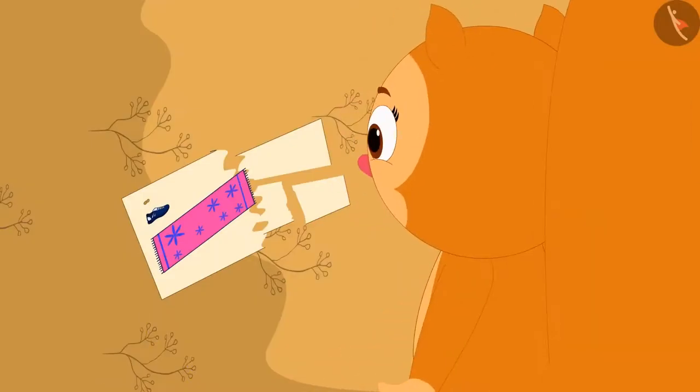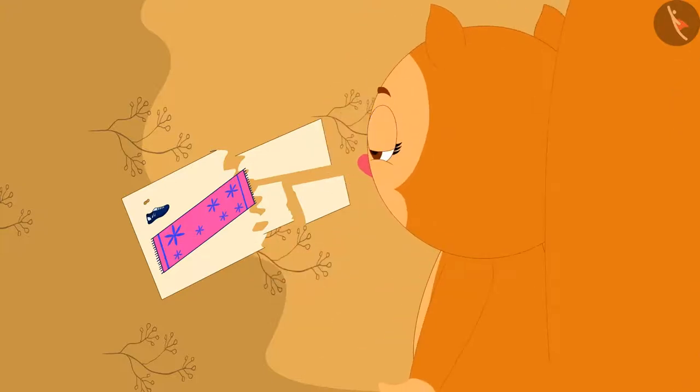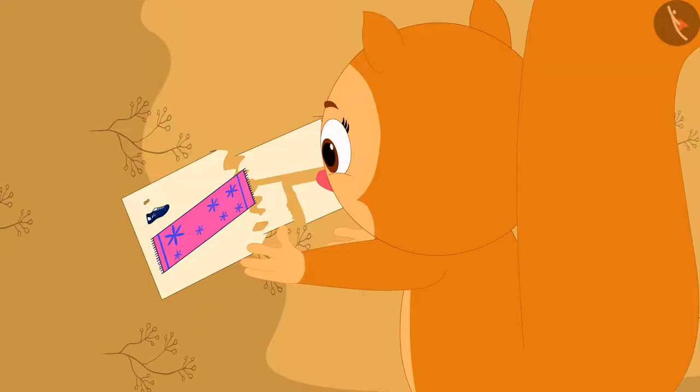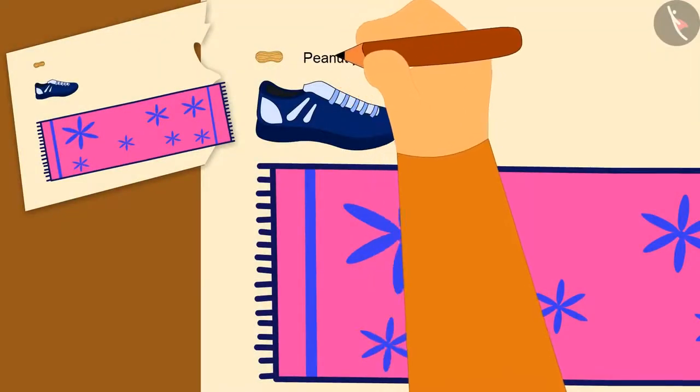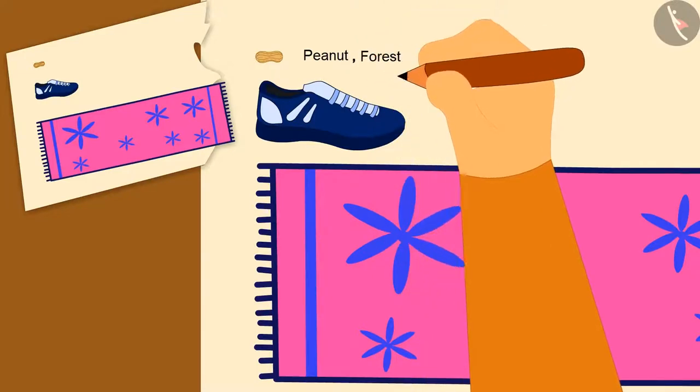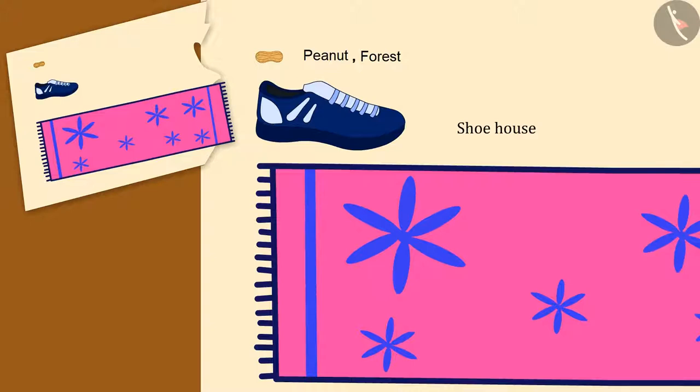Now, Chanda is unable to understand which is the measure of what. Chanda quickly wrote the names of the objects and places that were written on that paper on another paper, like this.